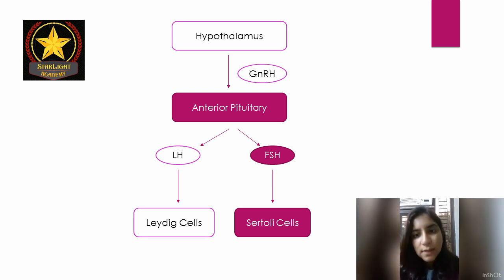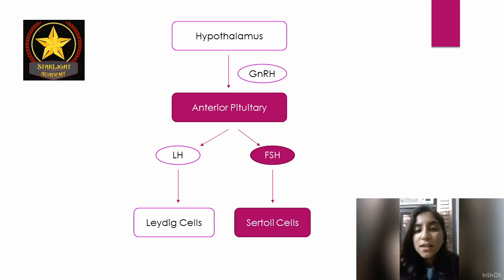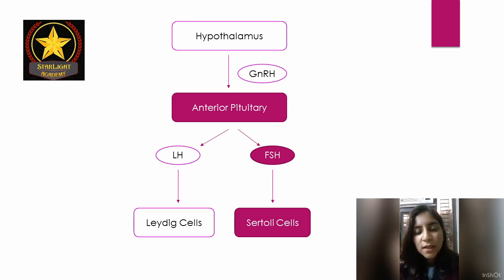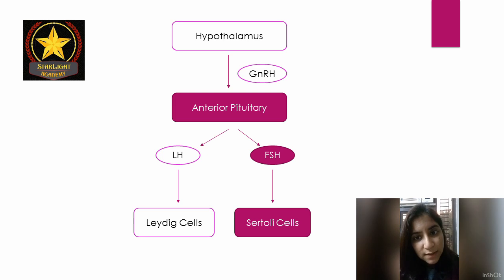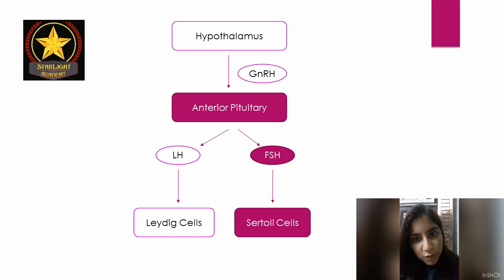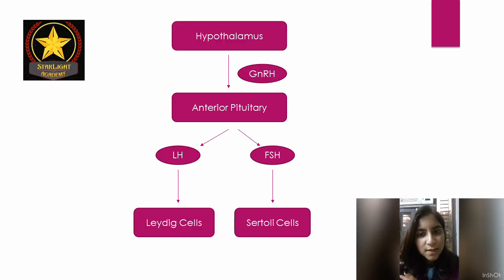Sertoli cells are known as nurse cells because they help in providing nourishment to the developing sperms. Upon stimulation by FSH, they perform the function of spermiogenesis — that is, the proper differentiation of sperms.